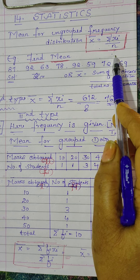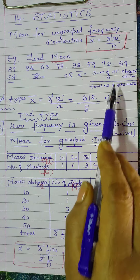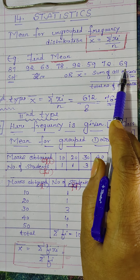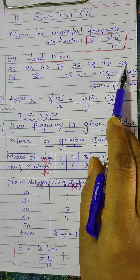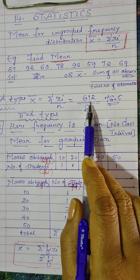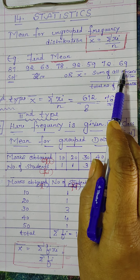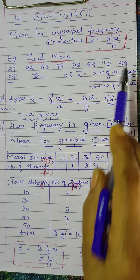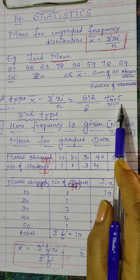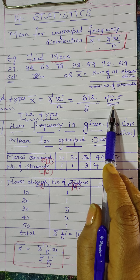x̄ = Σxᵢ / n. So Σxᵢ ka matlab kya hai? Sum of all observations — from 87 to 69 you have to add all the values. You will get 612. Now total number of observations — kitna values tum logane add kia? 8 values add kia, tho 8 se divide karo. That gives 76.5. So x̄ ka value mila 76.5.